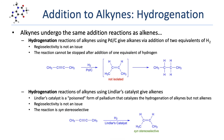Alkynes also undergo hydrogenation reactions. Use of common catalysts like palladium on carbon results in the formation of an alkane via the addition of two equivalents of hydrogen. The reaction proceeds to add one equivalent of hydrogen across one of the carbon-carbon pi bonds of the alkyne; the resulting alkene is also reactive under hydrogenation conditions and reacts further to give an alkane. Regioselectivity is not an issue because the same group is being added to both carbons of the pi bond.